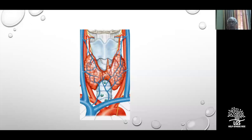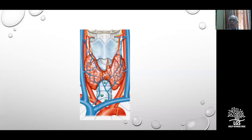You may find one or two bleeding points. We are operating under unipolar diathermy — I'm not talking about bipolar or other energy sources. Raise the upper flap until you reach the thyroid cartilage — that is the limit of the upper flap. For the lower flap, you expose both sternoclavicular joints.